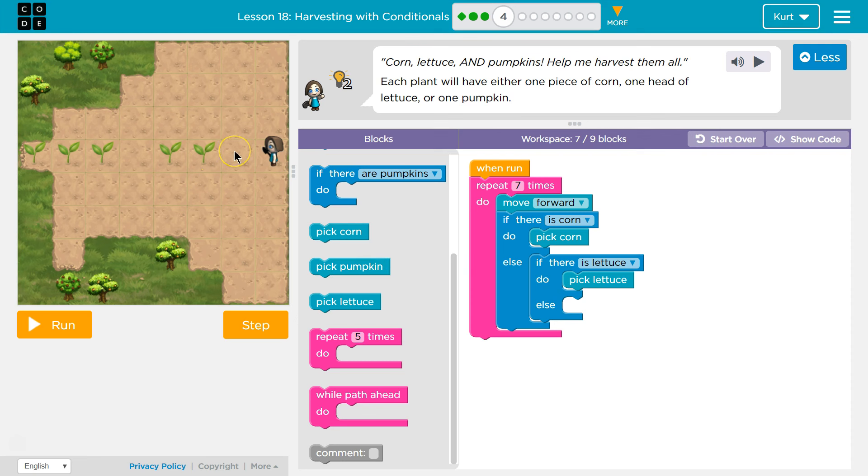You don't want to do that, because if I step forward here, I'll go through my loop. We'll start. I moved forward. Is there corn, and I'm standing right here. False. No, there is no corn, right? Okay, so I'll run whatever's in else. If there's lettuce. False. There's no lettuce. Okay, so I run whatever's in this else, which would have been pick pumpkin.